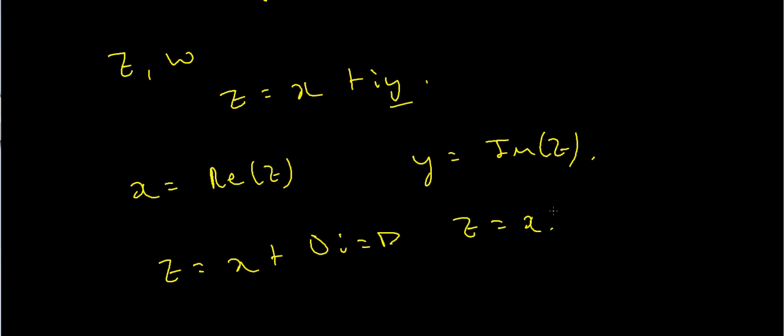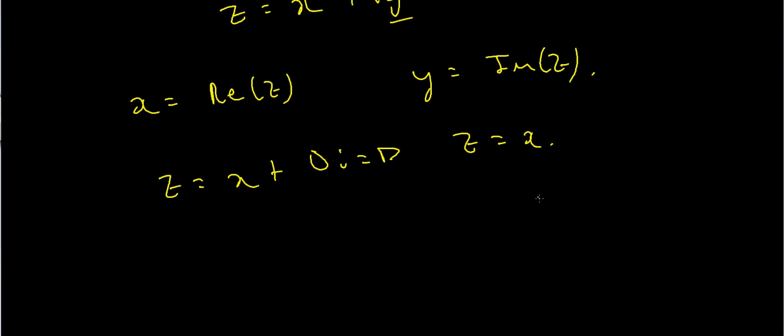And similarly, the imaginary parts which sometimes people write as iR, I mean, I like to write it like this anyway, that's just the set of all complex numbers which have a real part of zero. In other words, if instead of setting y equal to zero, I set x equal to zero. So when x is equal to zero, what happens?